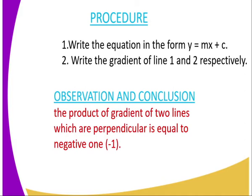That is the form of the equation of a straight line. Then the second procedure: you are supposed to write the gradient of line one and line two respectively. Then you go to the observation and conclusion. If the product of the gradients of the two lines, which are perpendicular, is equal to negative one, then we can conclude that the two lines are perpendicular. Therefore, multiply the gradient of line one by the gradient of line two — if you get negative one, then the two lines are perpendicular.